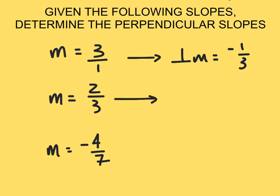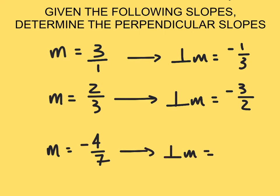Same thing with two thirds — my perpendicular slope, I'm going to flip my fraction to get three halves and make it negative. Now if I have a slope of negative four sevenths, my perpendicular slope is going to be seven over four. And because this number was negative, the opposite is positive. That's how you take each of these different kinds of slopes and transform them into their perpendicular slopes.